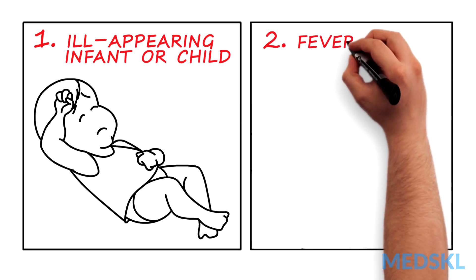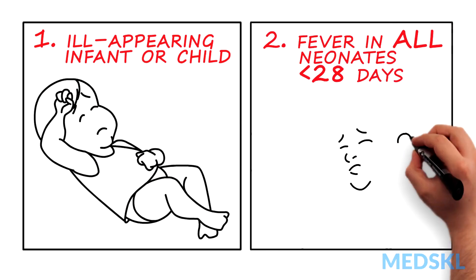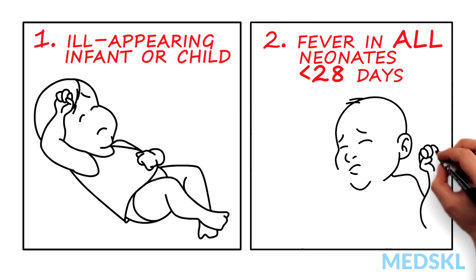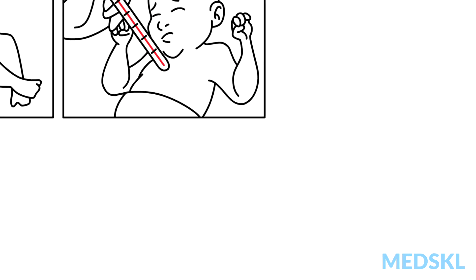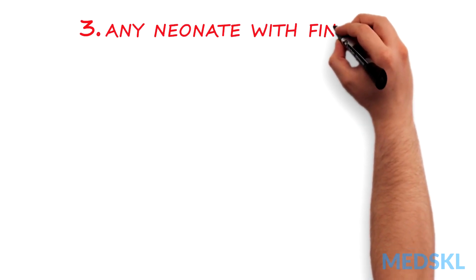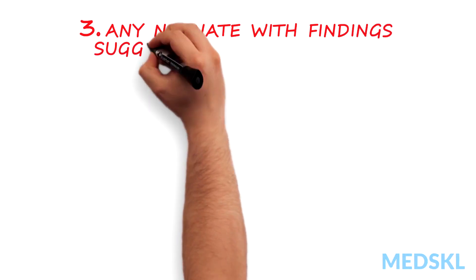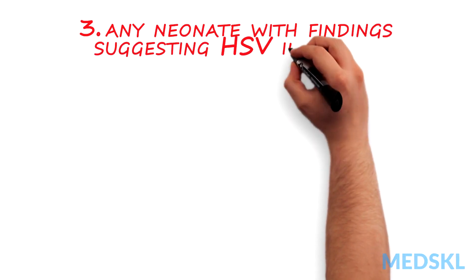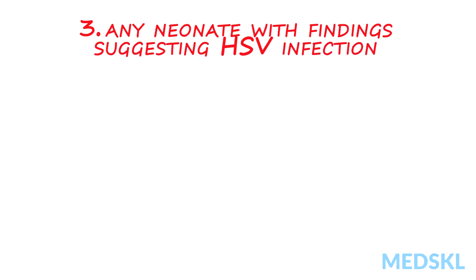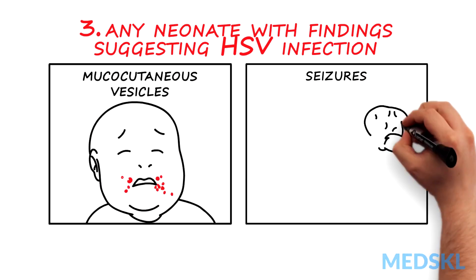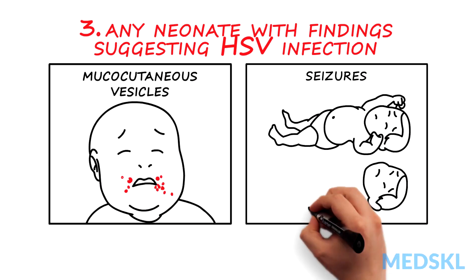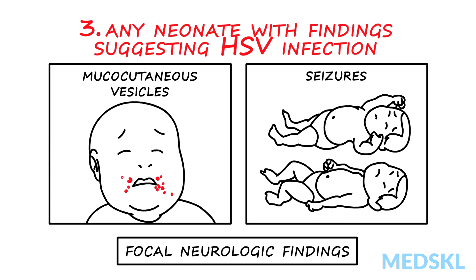Number two: fever in all neonates younger than 28 days, regardless of their clinical appearance. Number three: any neonate with findings suggesting HSV infection upon examination. These may include mucocutaneous vesicles, seizures, or focal neurologic findings, especially those with maternal risk factors for vertical transmission.